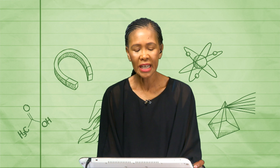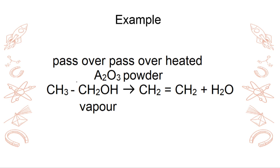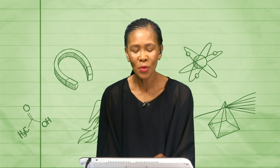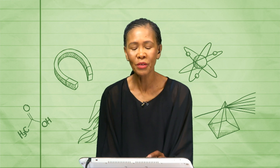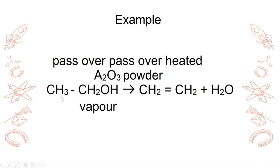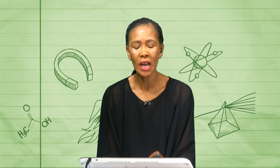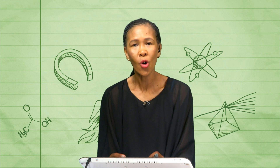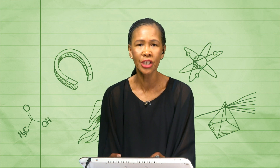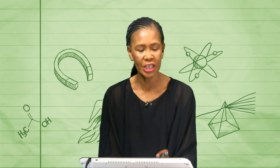Another example is passing the alcohol over heated Al₂O₃ powder. In this case the alcohol forms an alkene and water — almost similar, but with different conditions. The most important thing to note is what you are doing: are you taking something out, or putting something in? When you take out, it's elimination. When you're putting in, that's addition.